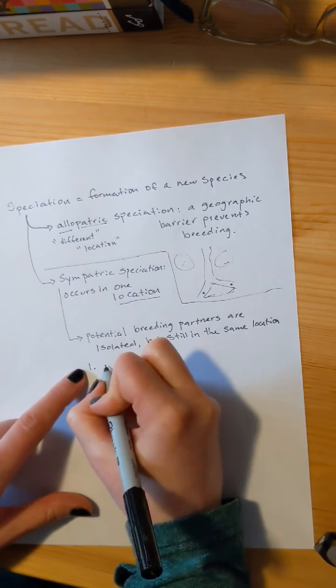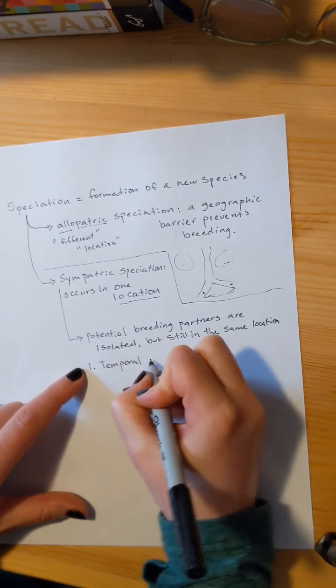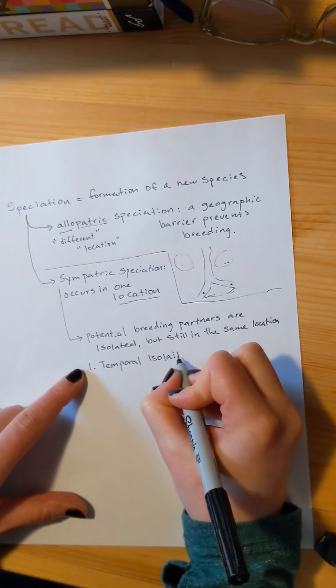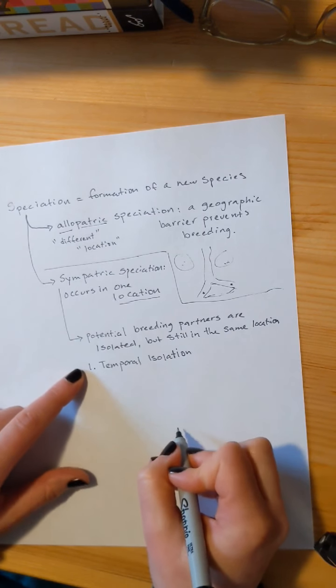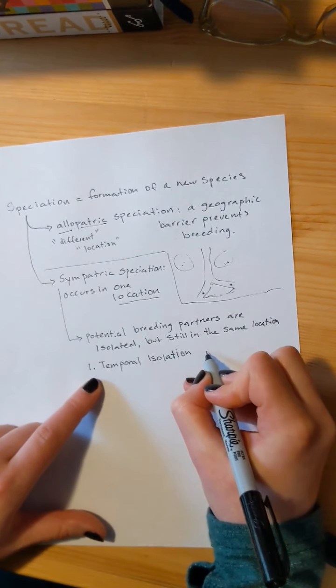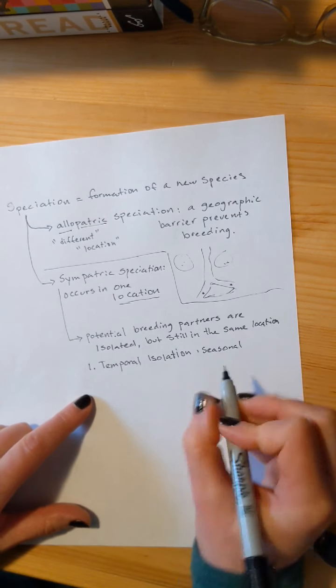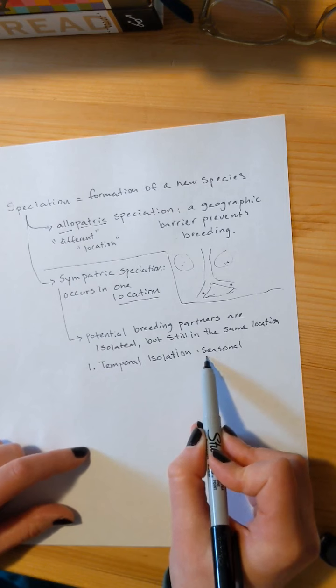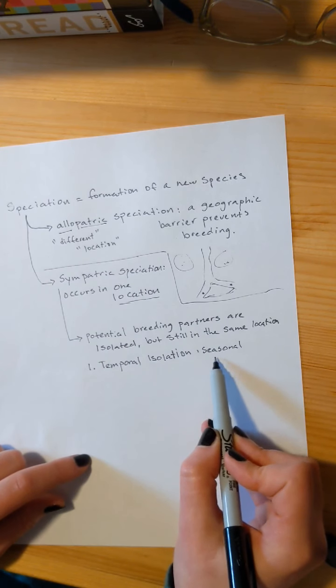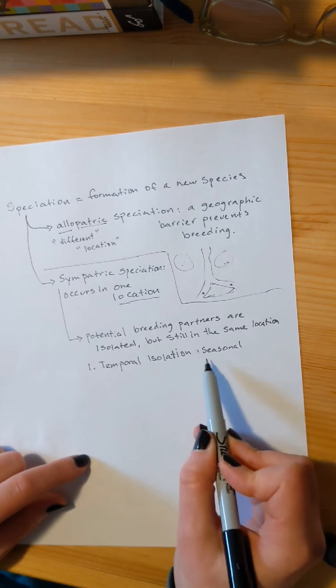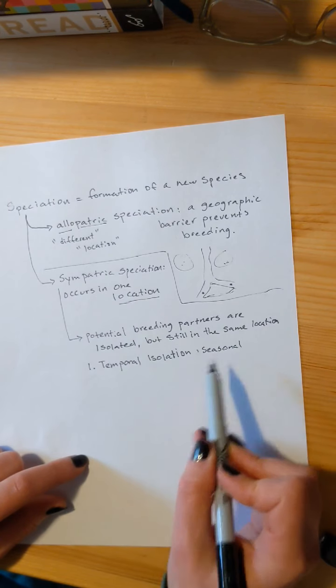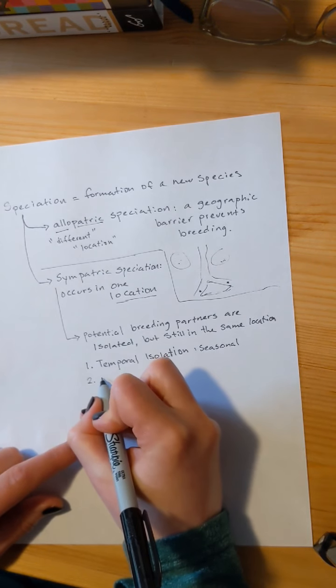You could have temporal isolation. Temporal isolation is going to be seasonal. Like, if my flowers for my tree only bloom in March, they are not going to be fertilized by pollen that is produced in December. They're not in the same season. They will not breed. They could be right next to each other, physically right next to each other. But they are isolated by timing.